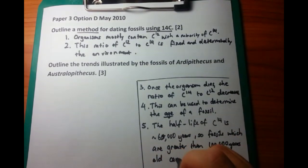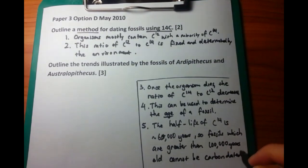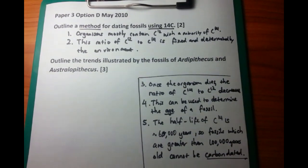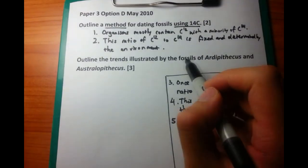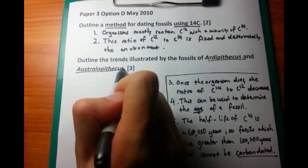So remember to put that down as point number 5. And these particular specimens cannot be carbon dated. It's a nice little principle that you need to know in regards to carbon dating.